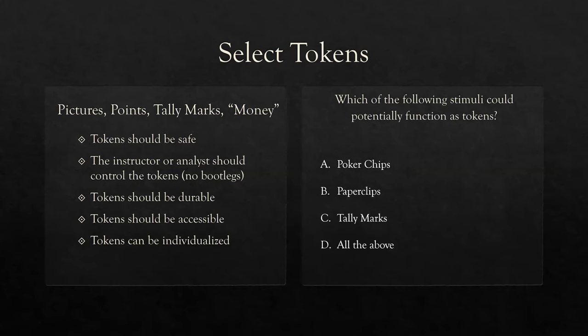Tokens should be accessible. I've seen situations where the tokens were out of reach, the child engaged in the target behavior, and the technician couldn't deliver the reinforcer — that's a problem. We want to be consistent with our reinforcement schedule. Tokens can also be individualized. Research indicates that preferred items used as tokens are actually more beneficial, so we print specific pictures for specific clients. When you have the time, resources, and availability — individualize.